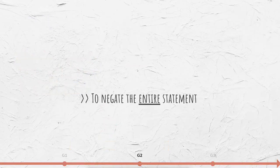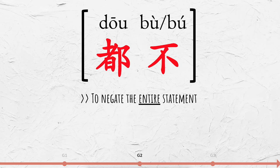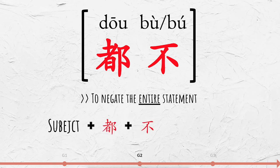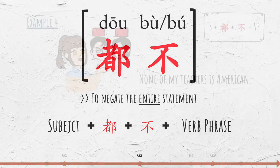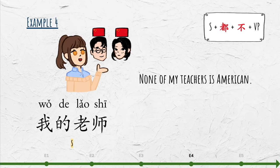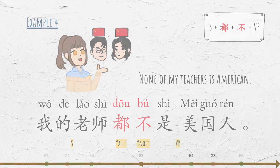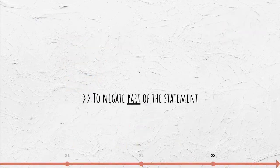To negate the entire statement, place 不 after 都. The structure is: subject + 都 + 不 + verb phrase. For example, 'None of my teachers is American': 我的老师都不是美国人。